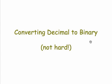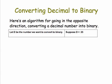How about converting in the opposite direction, starting with a decimal number and converting it to binary? That's not hard either. Here's a simple algorithm that we can use. Let's let D be the number we want to convert. In this case, let's suppose D is 25.